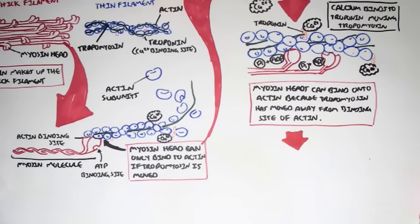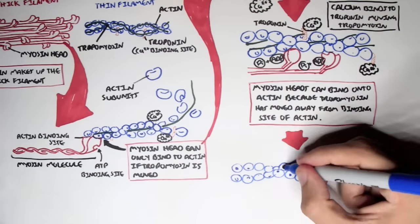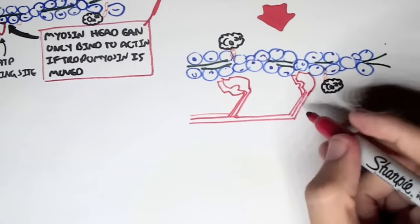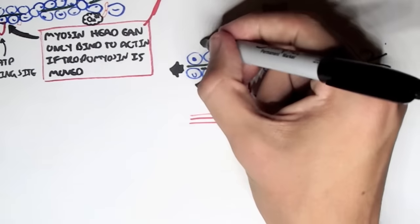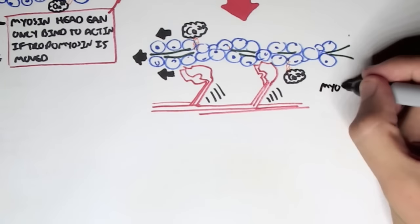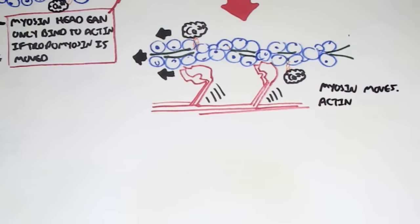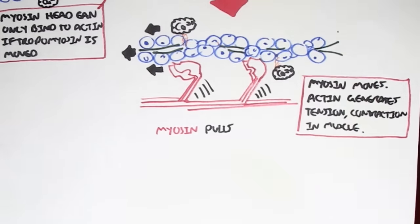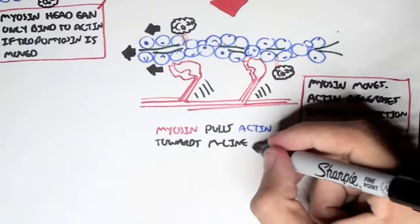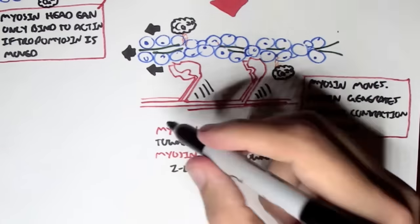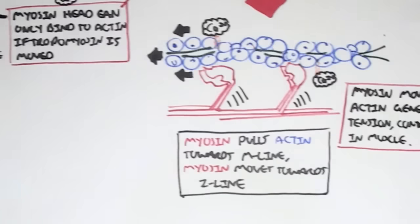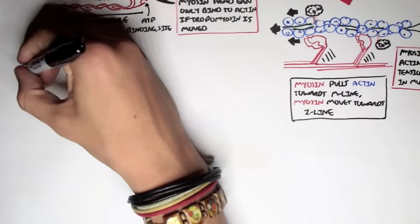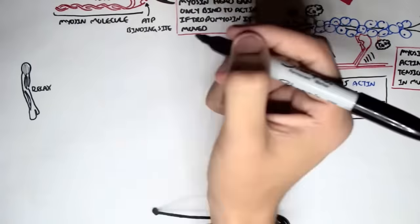Because of this, the myosin molecules in red pull the thin filaments towards the center of the sarcomere — towards the M line. This is why it needs ATP. When myosin moves, actin will generate tension and contraction in muscle. Myosin will pull actin towards the M line, and myosin itself will then move towards the Z line.